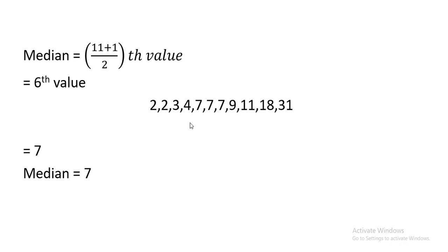To summarize: when finding median for ungrouped data, first arrange the data, then use the formula to find the position, then look at that position in your data to get the exact answer. If you forget to arrange the data, the answer will be incorrect because median is always the middle value of arranged data. Array the data first, use the formula, find the position, then declare your answer.